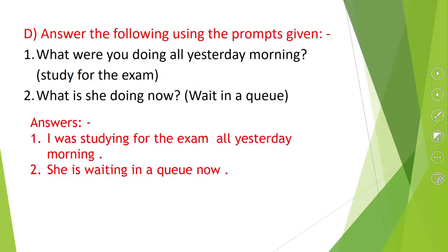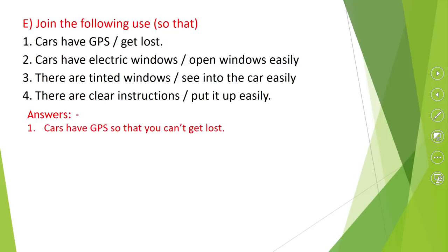Now the other sample: join the following using 'so that.' Cars have GPS — get lost. The answer: cars have GPS so that you can't get lost. After 'so that,' place the subject 'you,' then decide on 'can' or 'can't' based on the meaning. Since tinted windows prevent you from seeing inside, we use can't. Here it means: so that you can't get lost.